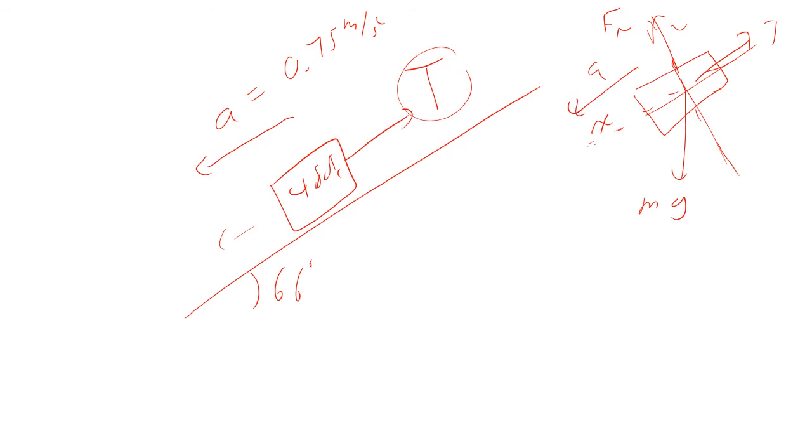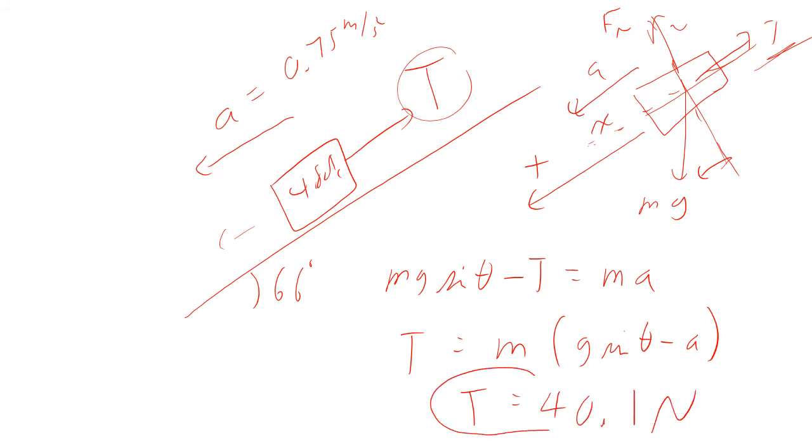So, I don't like minus signs, so I'm going to say that direction is positive. So, this is in the positive direction, the tension is in the negative direction. So, mg sine theta minus tension equals ma. So, the tension is going to be m times g sine theta minus a. And so, the tension turns out to be 40.1 newtons.